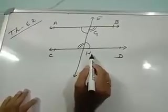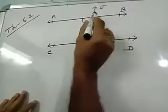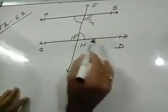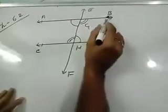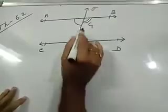You have to prove the interior alternate angles are equal. That means, angle AGH is equal to angle GHD and angle BGH is equal to angle CHG.